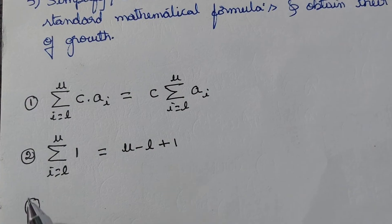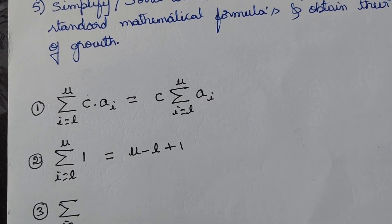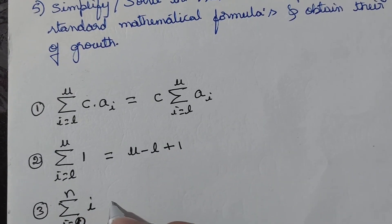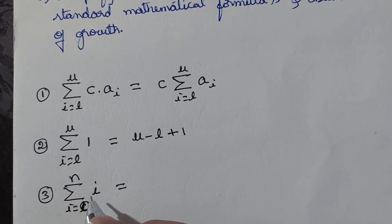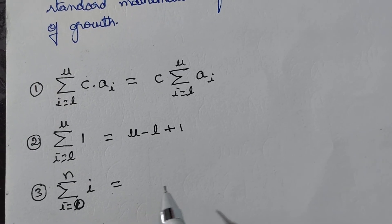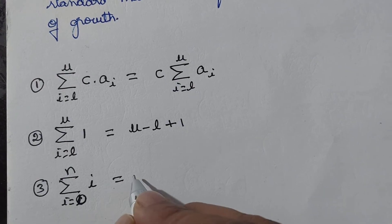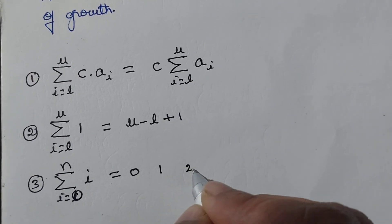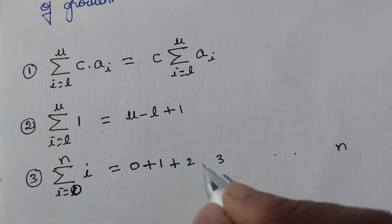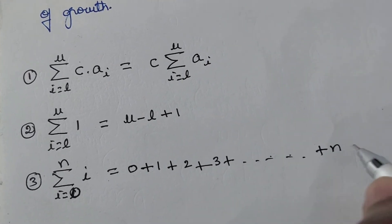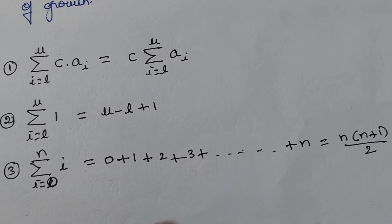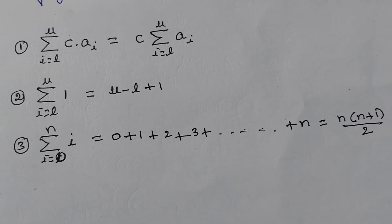The third frequently used formula is: the summation of i where i varies from 0 to n. Substituting values — 0, 1, 2, 3, up to n — and adding them gives the formula n(n+1)/2. If you know these three formulas, you can solve any summation expression and analyze any non-recursive algorithm easily.